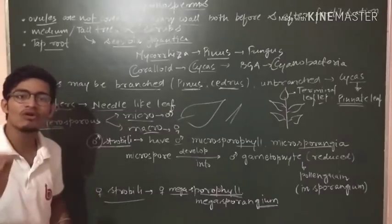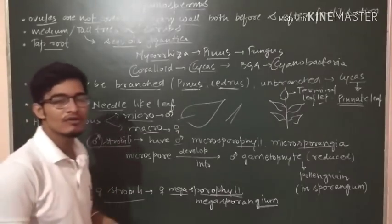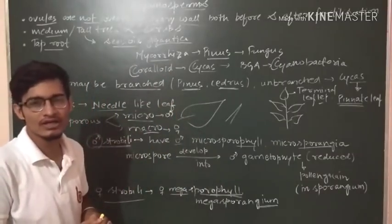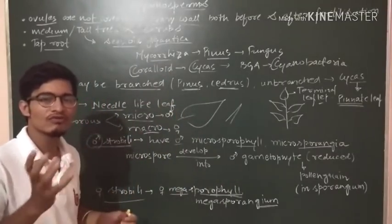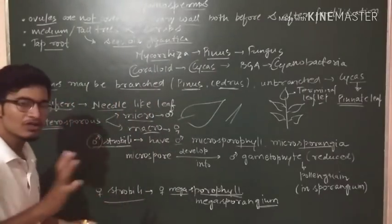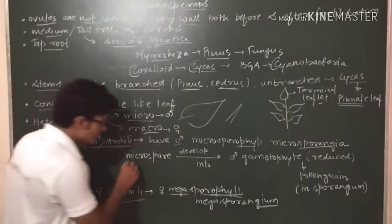This is male strobilus and male cone. Then female strobilus and female cone. We call it pteridophyte because we have cone and strobilus, two things.